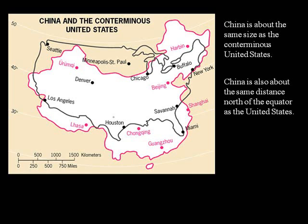Now if we compare the size of China versus the size of the United States, they're about the same size. This is the contiguous United States, so it doesn't include Alaska or Hawaii. Once we add in Alaska and Hawaii, the United States is much larger than China. But if we just consider the lower 48, they're about the same size. Also note that not only are China and the United States about the same size, but they're also about the same distance north of the equator.